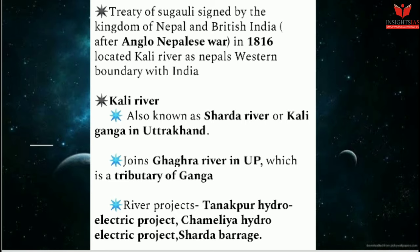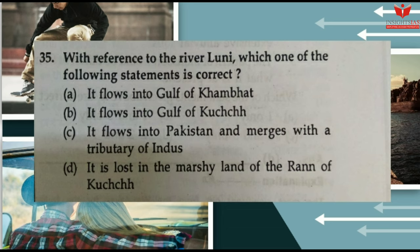Regarding this, a previous year question was asked. Small rivers in India are frequently tested. The question was: 'With reference to the river Luni, which of the following statements is correct?' Option A: it flows into the Gulf of Khambhat; Option B: it flows into the Gulf of Kutch; Option C: it flows into Pakistan and merges with a tributary of the Indus; Option D: it is lost in the marshy land of the Rann of Kutch. The answer is Option D. The Luni river is located in Rajasthan, originates in Pushkar, is 530 km long, and is the only river in India that dries up in the mainland — it does not flow into any sea.